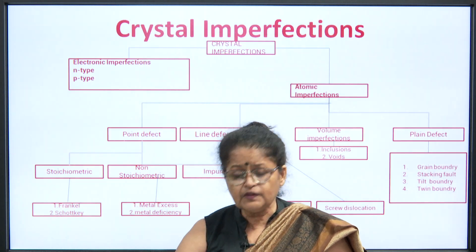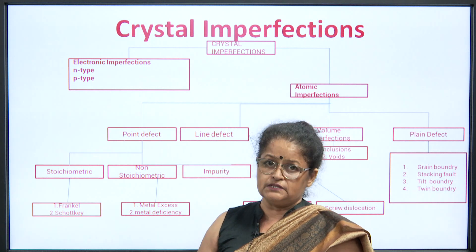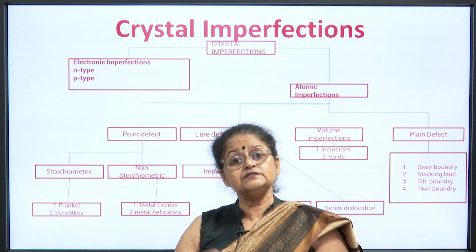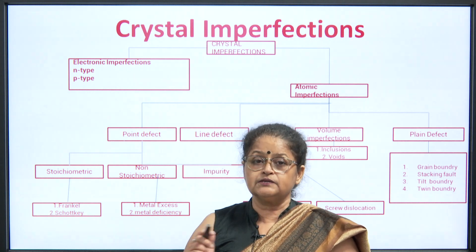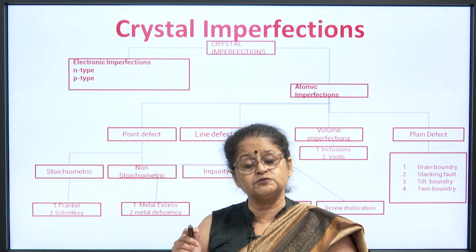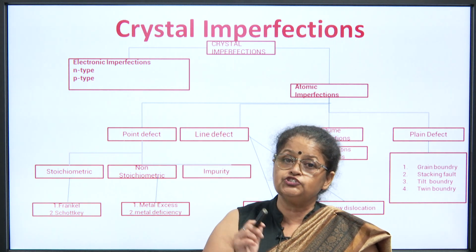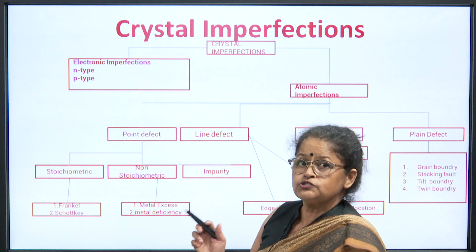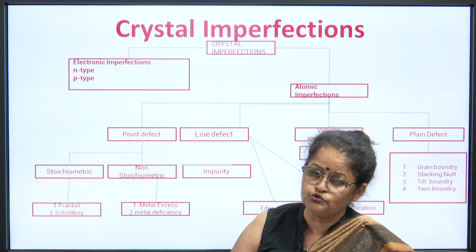Naturally occurring materials have imperfections most of the time, and this imperfection is a boon to the metal and the crystal, because due to these imperfections crystals show specific properties that are used as engineering properties in engineering materials. Now let us know how many types of crystal imperfections we are going to discuss.